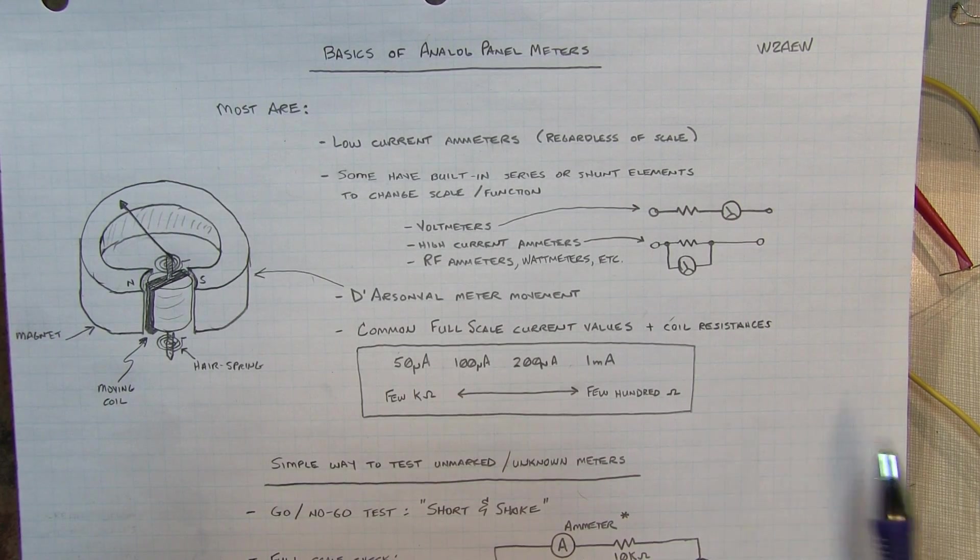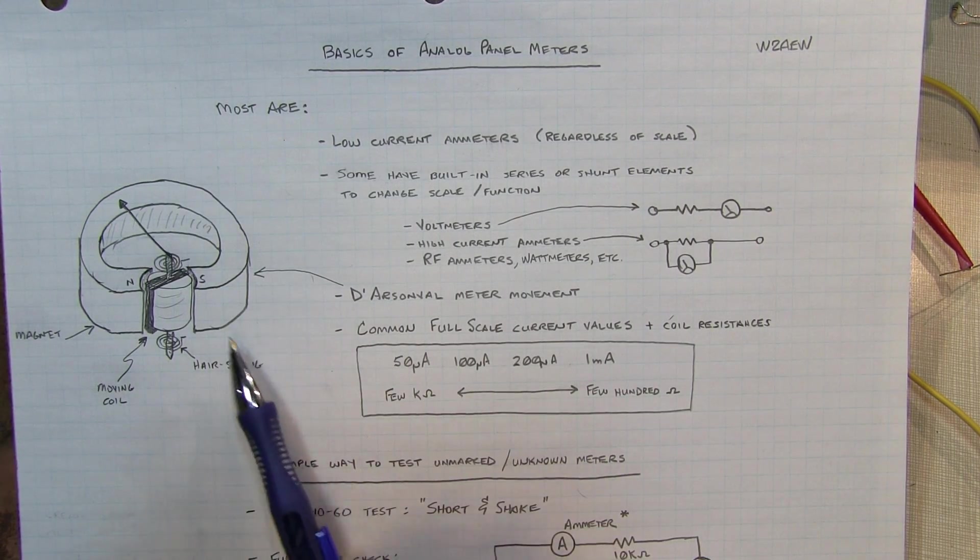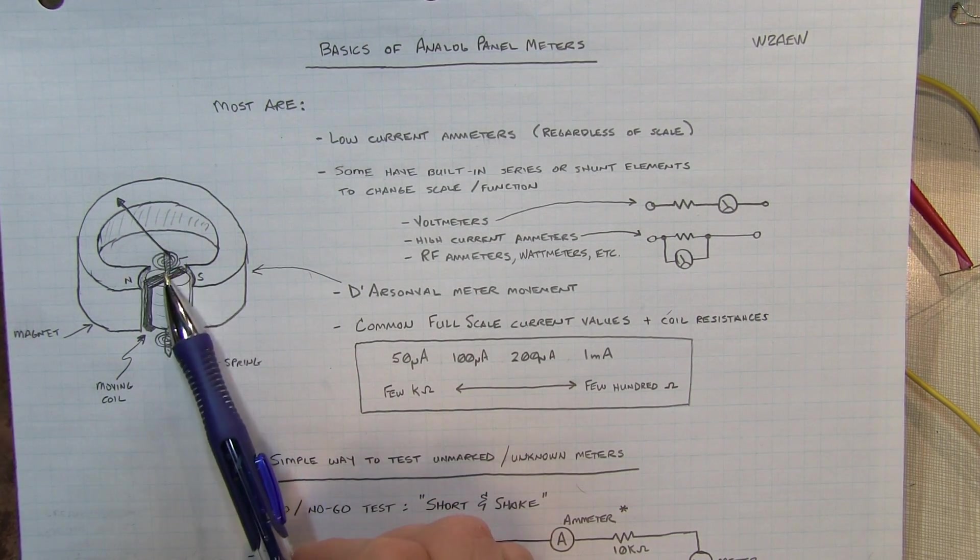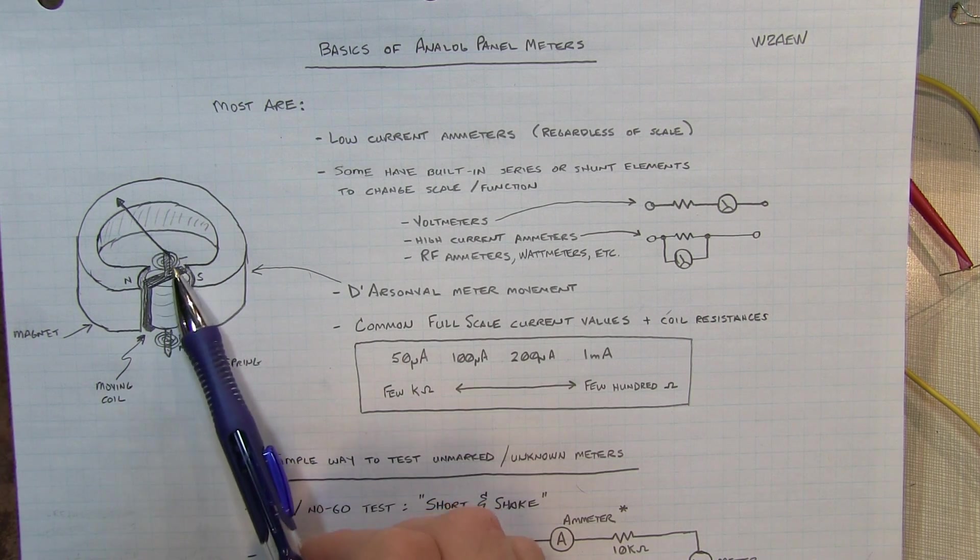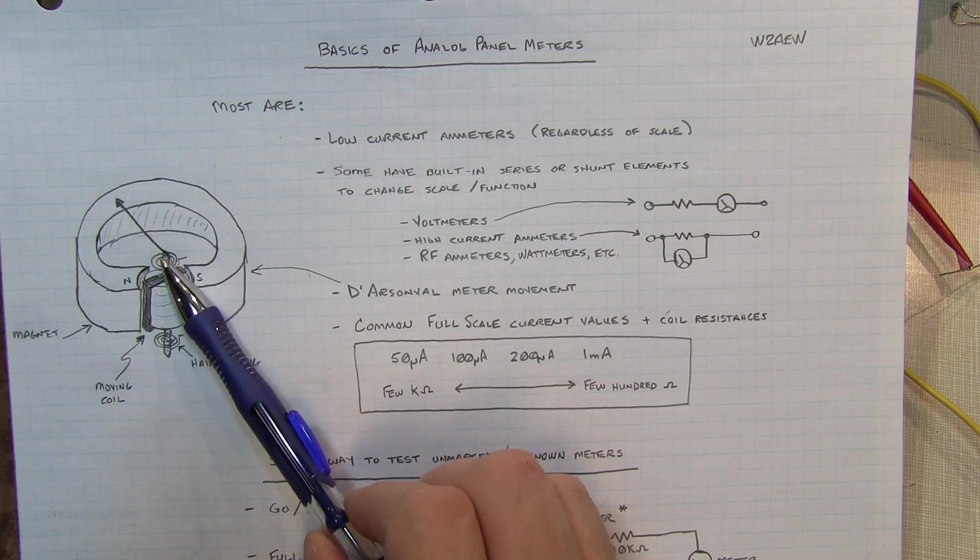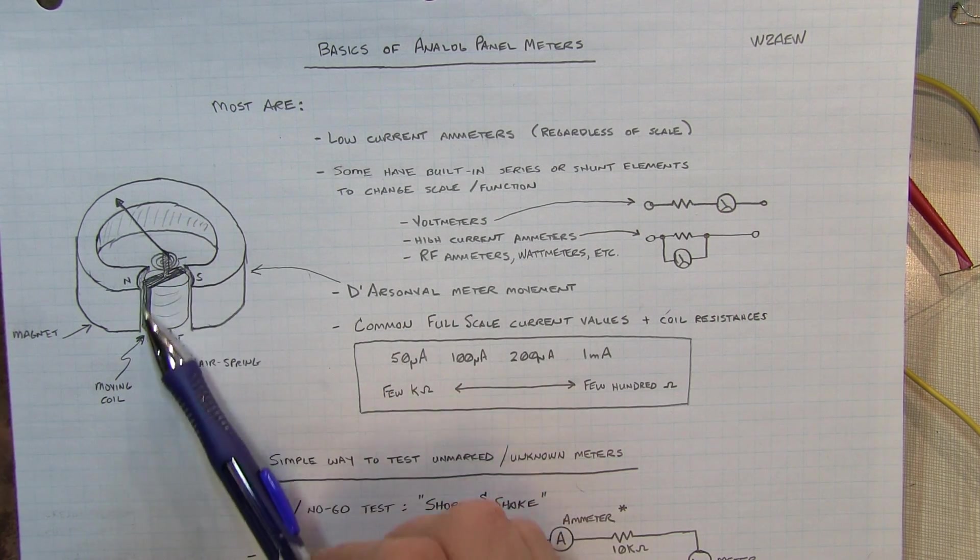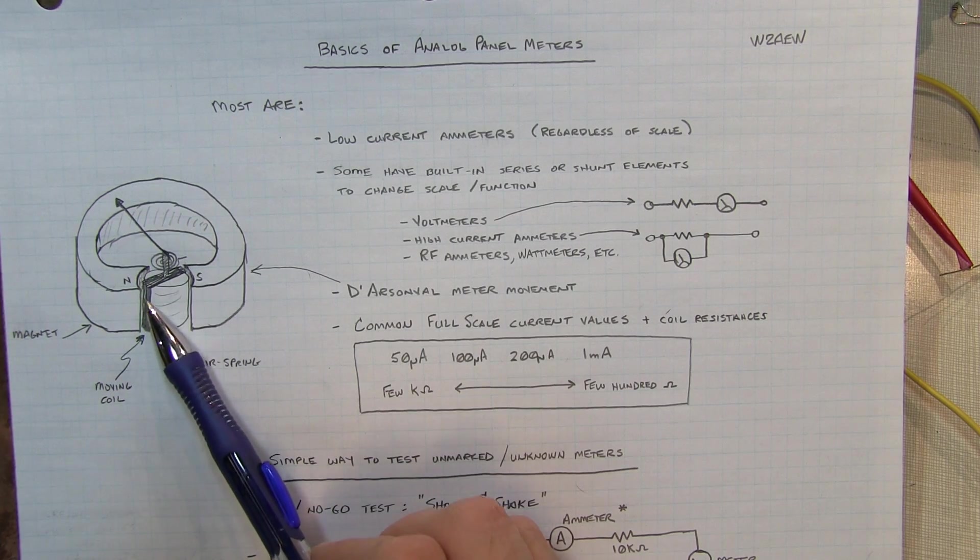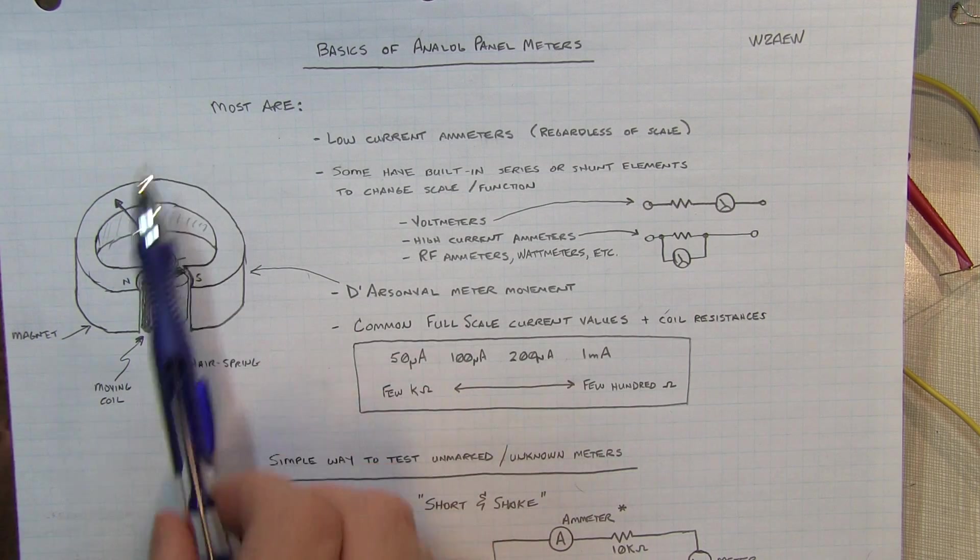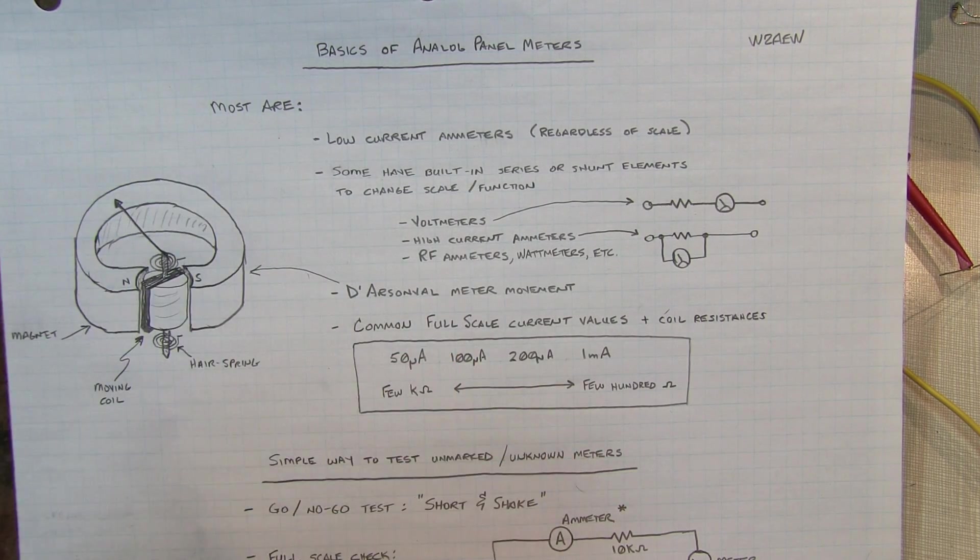Now nearly all of these meters employ a D'Arsonval meter movement, which consists of a permanent magnet, a little cylindrical core, a coil of wire that is mounted to kind of a frame with bearings at either end with the pointer on it. And when you pass a DC current through that coil, it creates a magnetic field that reacts to the field of the permanent magnet that causes the coil to rotate and the meter pointer to move along the scale.